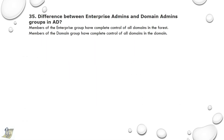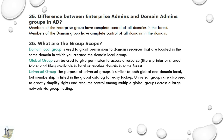35th question: Difference between Enterprise Admins and Domain Admins groups in AD. Members of the Enterprise Admins group have complete control of all domains in the forest. Members of the Domain Admins group have complete control of all objects in the domain. 36th question: What are the group scopes? Domain local group is used to grant permissions to domain resources located in the same domain. Global group can be used to give permission to access a resource like a printer or shared folder in the local or another domain in the same forest. Universal group membership is listed in the global catalog for easy lookup.